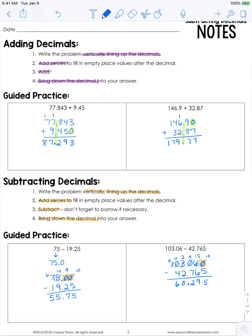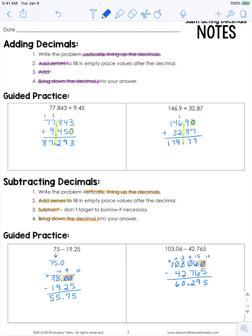So quick little review. You write it vertically, add zeros, add or subtract, and then just drop down that decimal right into your answer.